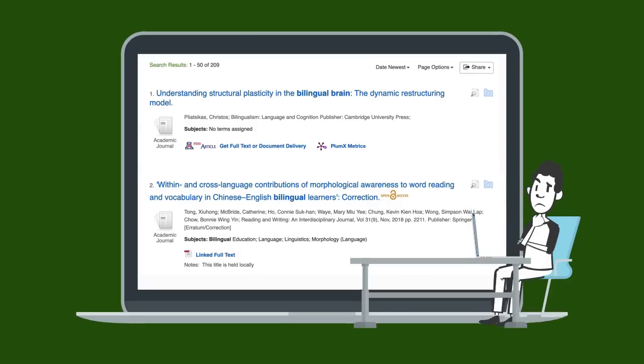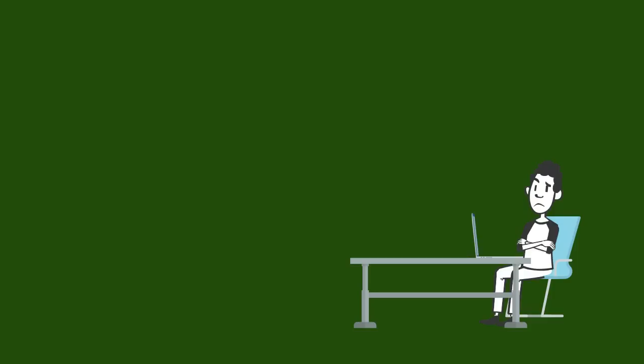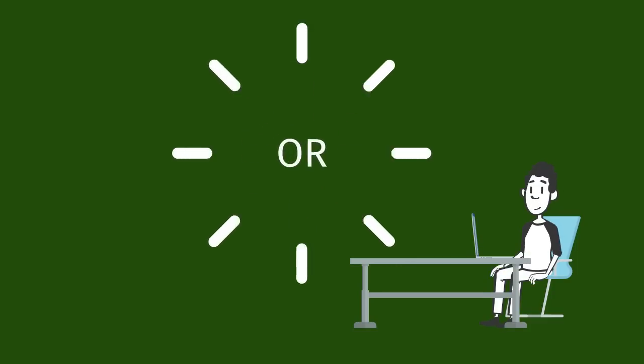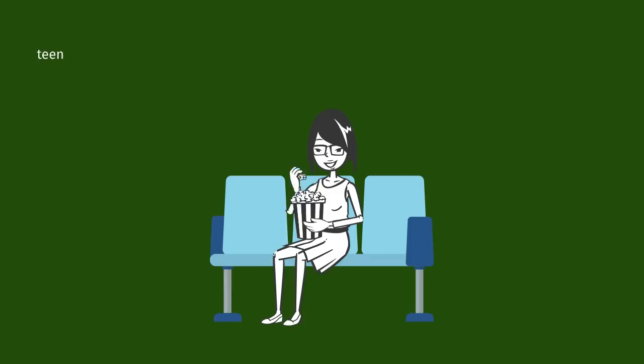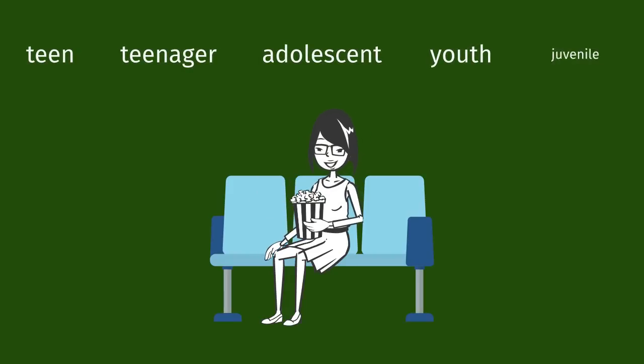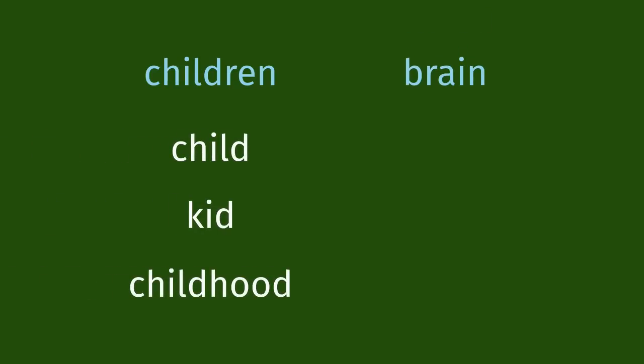Library databases also use another important word to combine key terms, and that word is the magical OR. OR can add so much to your search. As you know, there are many different terms you can use for the same idea or concept. You can use OR to include those other words, words like synonyms, related words, and examples. So for the word children, we could also use the words child, kid, and childhood. And for brain, we could also use a related word like cognitive.